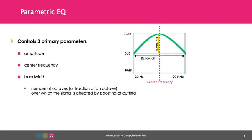Parametric EQs allow users to control three primary parameters: amplitude, center frequency, and bandwidth. You already know what amplitude and frequency are. Bandwidth is the number of octaves or fractions of an octave over which the signal is affected by boosting or cutting.